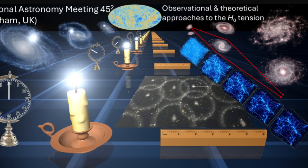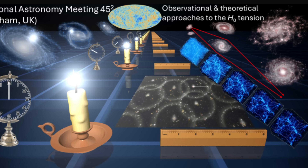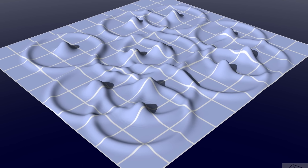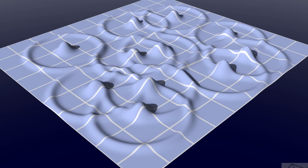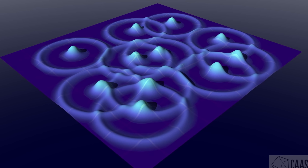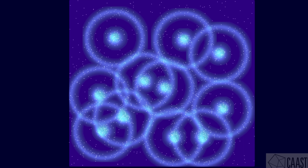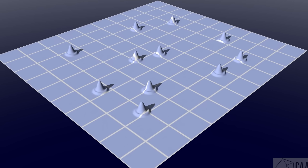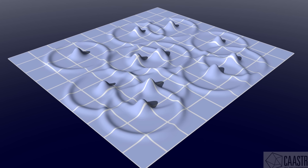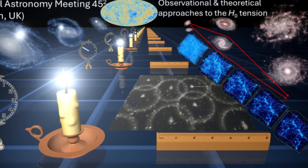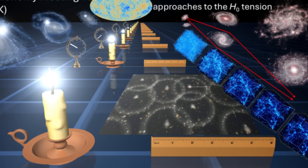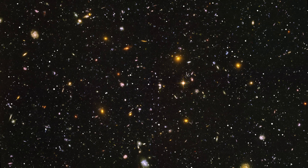By themselves, Baryon Acoustic Oscillations are a really important standard ruler in cosmology. We know that these bubbles or ripples are definitely there, as many different surveys discovered them over the years. These vast spherical arrangements of cosmic structures represent ancient fossils from the beginning of the universe — fossilized sound waves, because technically this represents the ancient sound of the universe. The reason they're so important is their size: a standard diameter of approximately 1 billion light years. Because we know their size, they serve as a cosmic tape measure to figure out distances and how fast the universe is expanding.